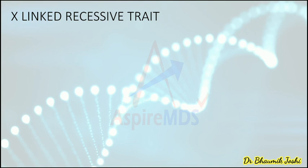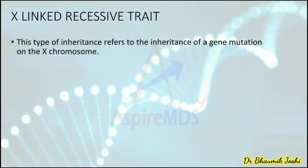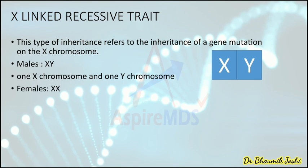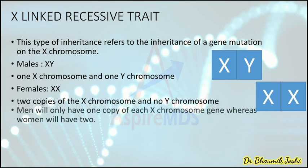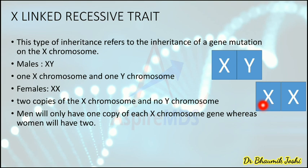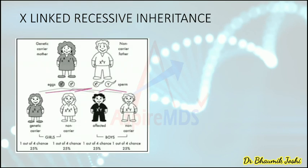Next is X-linked recessive trait. X-linked diseases are mostly recessive; dominant X-linked is rare. This type of inheritance refers to inheritance associated with a gene mutation on the X chromosome. Males have XY and females have XX. In females with XX, one X gets inactivated — this is known as X inactivation — and only one X remains active.